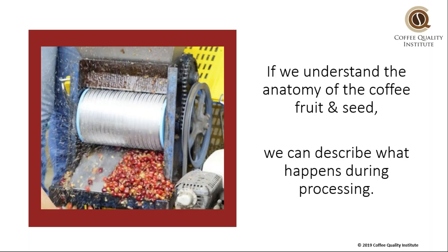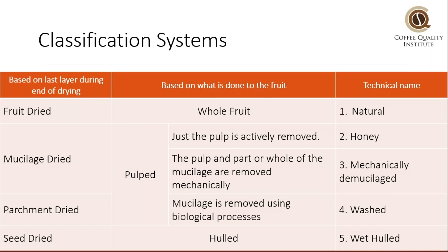At CQI, to understand coffee processing, we use the anatomy of the coffee fruit and seed, because when you understand the anatomy, you can really describe what is happening during any coffee process. At CQI, we use the technical name of the process in our curriculum, which is the column on the right: natural, honey, mechanically demucilaged, washed, and wet-hulled. However, you can think of these also botanically — that is sort of the column on the left. It's based on the last layer of coffee during the end of drying, so the drying phase: what is the layer that is present during drying?